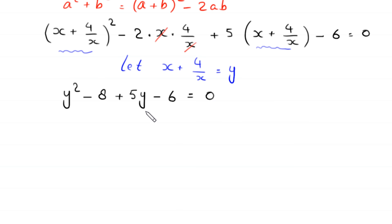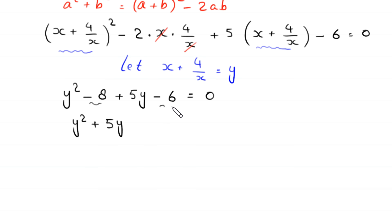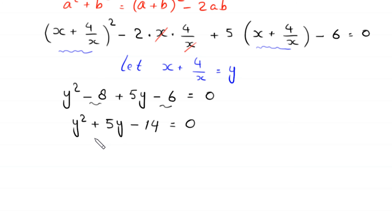Combining constants, y squared plus 5y, and negative 8 minus 6 gives negative 14, so y squared plus 5y minus 14 equals 0. This is a quadratic equation and it is factorable.